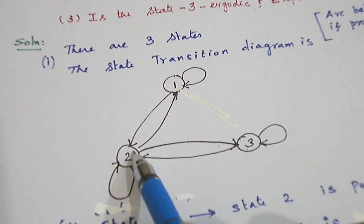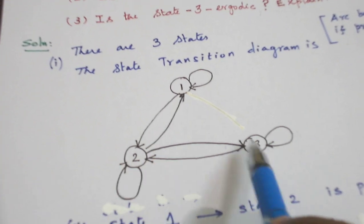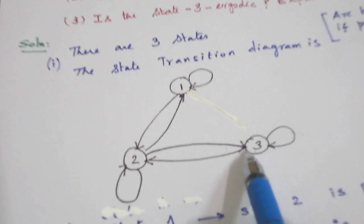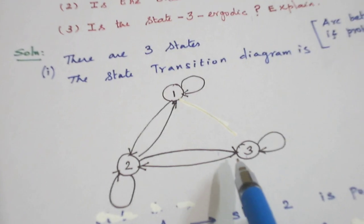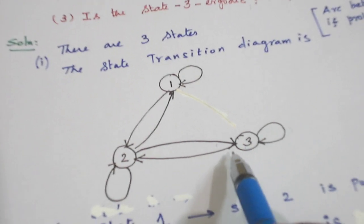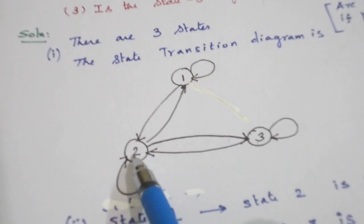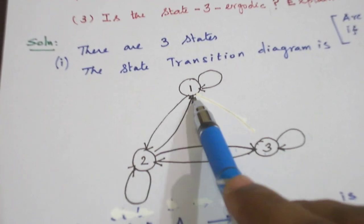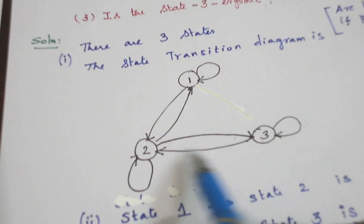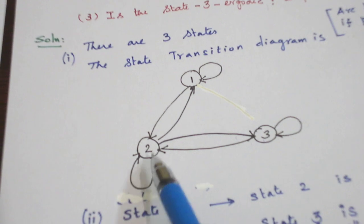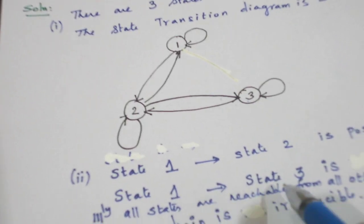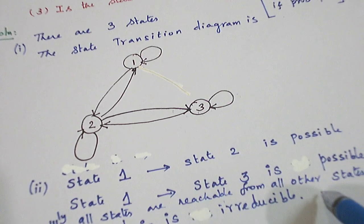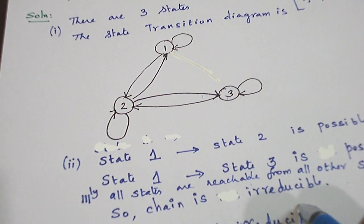State 2 to 1 direct arc is there so it is reachable. State 2 to 3 direct arc is there so it is reachable. State 3 to 1 it is reachable via state 2. 3 to 2, 2 to 1. State 3 to 2 direct arc is there so it is reachable. So all the states are reachable from all other states. So the chain is irreducible.